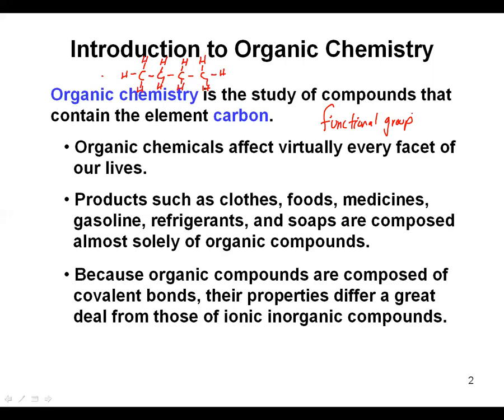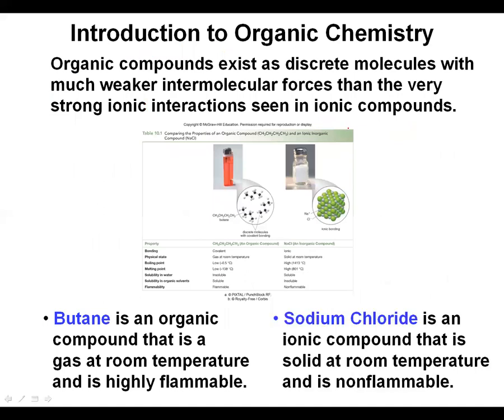Organic chemicals affect virtually every facet of our life — they're in products such as clothes and foods. Because they are basically carbons and hydrogens, they are held together by covalent bonding, as both carbon and hydrogen are non-metals, so they'll be sharing electrons. They're much different than inorganic compounds and ionic compounds. Organic compounds exist in discrete molecules held together by intermolecular forces, things like dispersion forces mostly, since most organic compounds are non-polar.